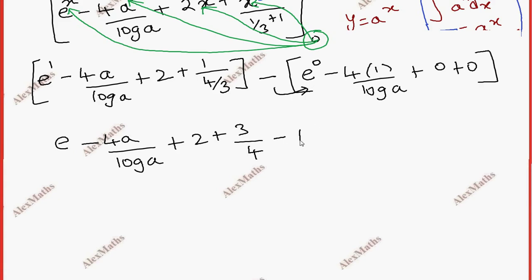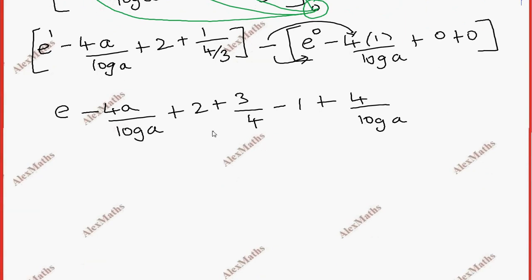0 power 0 is 0, so minus. This is like terms, we will group it. The first term is e, the numbers are 1, 1 plus 3 by 4, 7 by 4. The numbers, 1 by log a, the numbers are common, 4 minus 4.